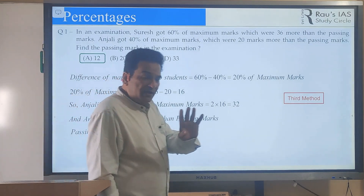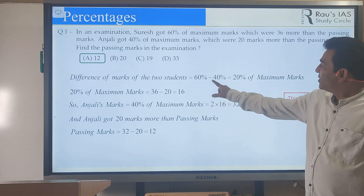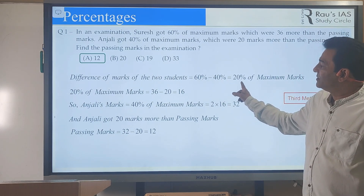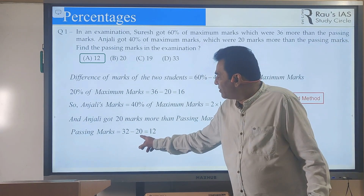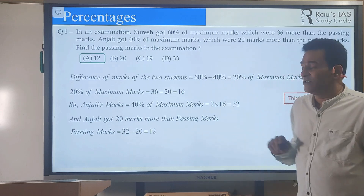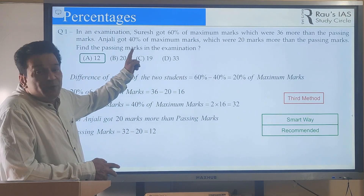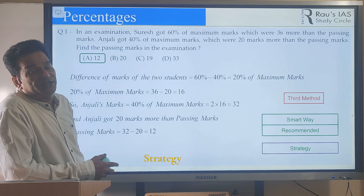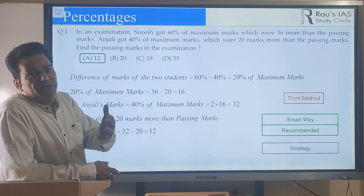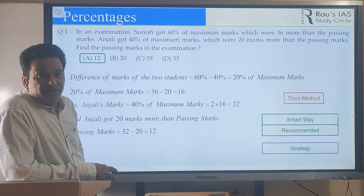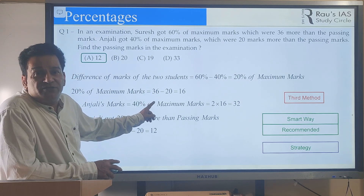If you look at this particular method, it does not involve complicated calculations. You cannot make a mistake on subtracting 40 from 60 to get 20%, or subtracting 20 from 36 to get 16, or multiplying 16 by 2 to get 32, or subtracting 20 from 32 to get the final answer of 12. This method has fewer steps and less complicated calculations — this is a smart way of doing this kind of question. This is called strategy. We saw three methods of solving the same question. Either you identify the strategy yourself, or you take a teacher's help to understand what the right strategy is for that kind of question. The third method is the only one you should be using.